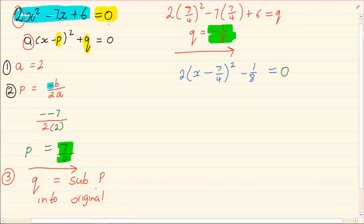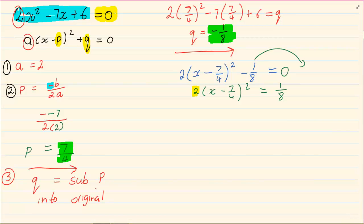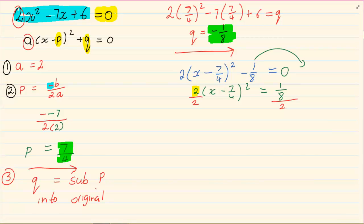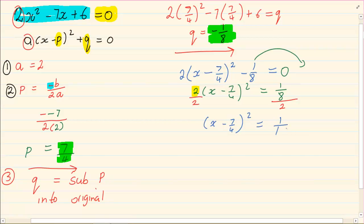Now we have to simply solve for x. To solve for x we are going to have 2 times (x minus 7 over 4) all squared, and we are going to take the minus 1 over 8 over, so I have 1 over 8. Then we are going to get rid of the 2 by dividing both sides by 2. So we have (x minus 7 over 4) all squared is equal to 1 over 16.